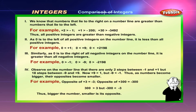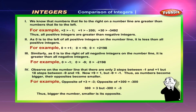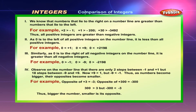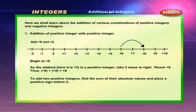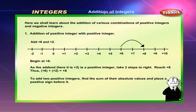Thus, as numbers become bigger, their opposites become smaller. For example, the opposite of plus 3 is minus 3, and the opposite of plus 300 is minus 300. Since 300 is greater than 3, minus 300 is lesser than minus 3. Thus, the bigger the number, the smaller is its opposite. Addition of integers — we shall learn about the addition of various combinations of positive and negative integers.